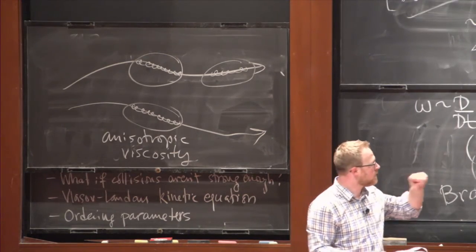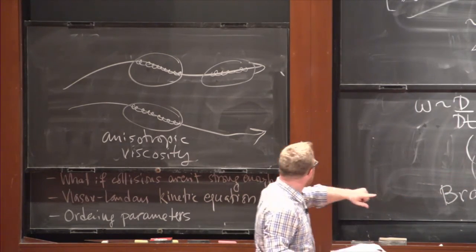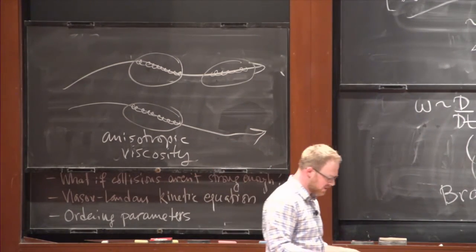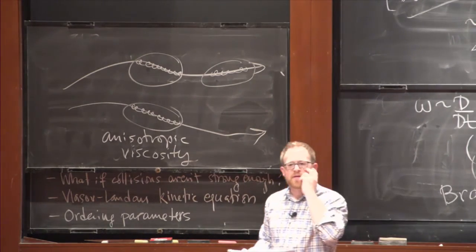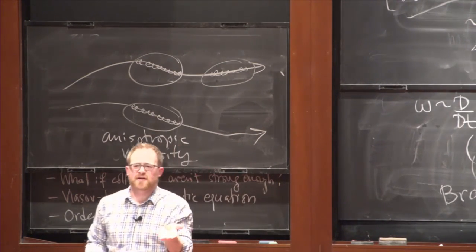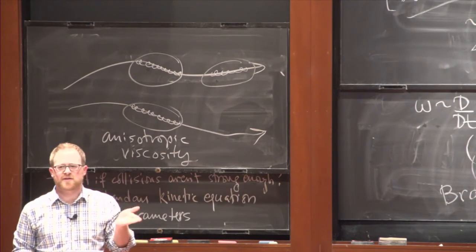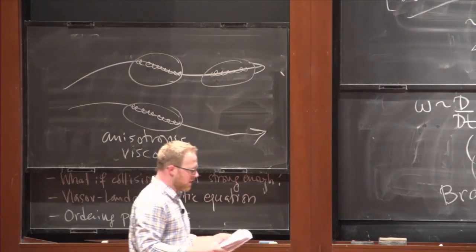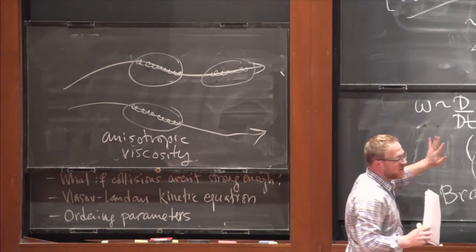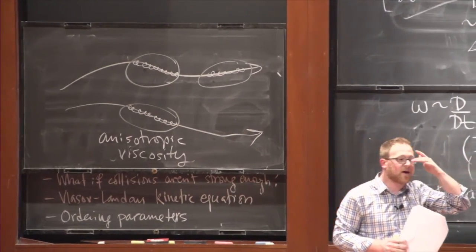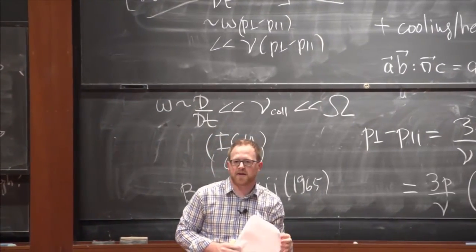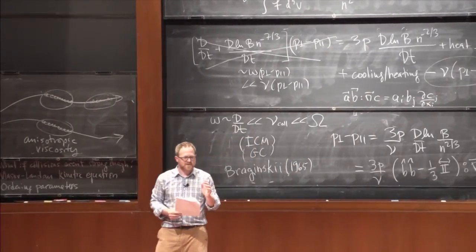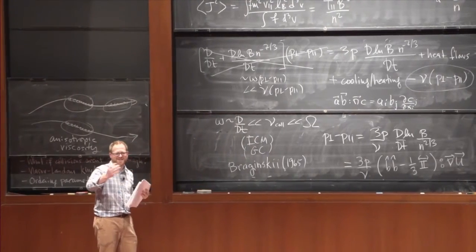On page 54 of the notes I put the full set of Bruginski-MHD equations with anisotropic conduction and anisotropic viscosity. Despite this being known to the plasma community since the 1960s, there are still surprises occurring in the astrophysical plasma community as it wakes up to this kind of physics. It's good to be learning this now.